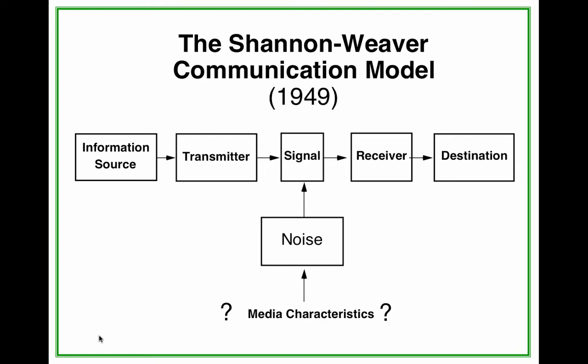The idea was that communication is a process of sending and receiving messages, or transferring information from a sender to a receiver. The model was originally designed to mirror the functioning of radio and telephone technologies. There is an information source, like a person, which produces a message. There is a transmitter which encodes the message into a channel, and signals are adapted for transmission by a receiver, which decodes the message from the signal, and then the destination where the message arrives — another human being.